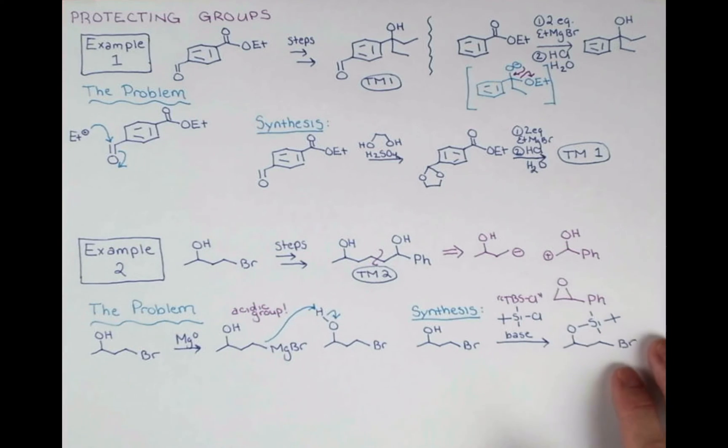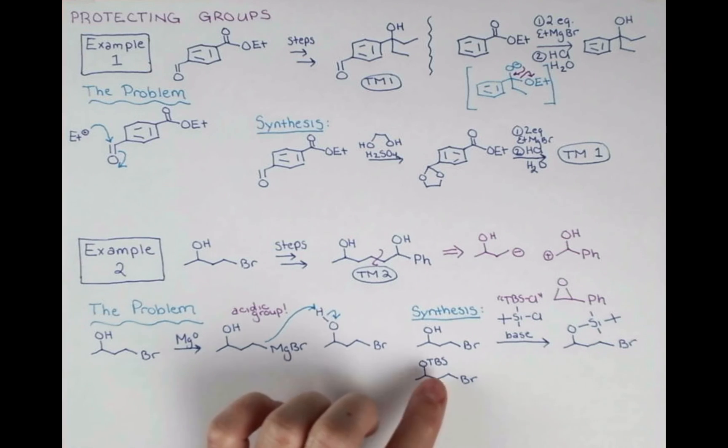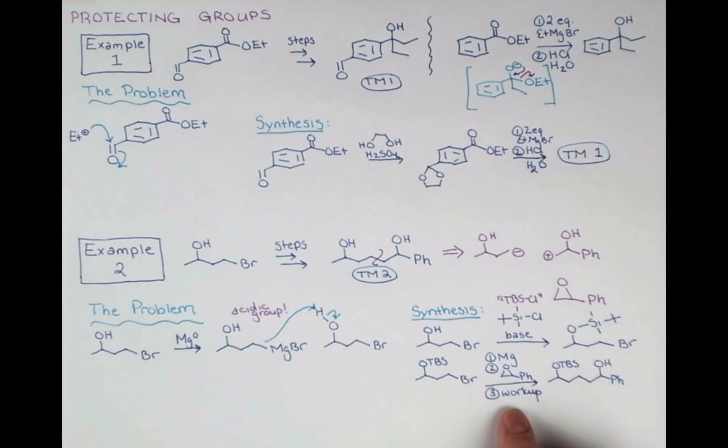Now we don't usually draw this whole group on here. Let me just show you how we would abbreviate this structure. Now that this oxygen contains a base-stable protecting group, we can go ahead and form a Grignard here and attack this epoxide. Now if this workup is acidic, that might knock off our TBS group right then, and so we might kick off the TBS and free up our alcohol.